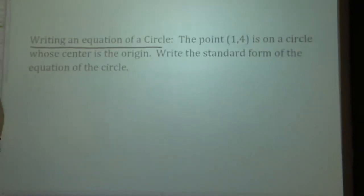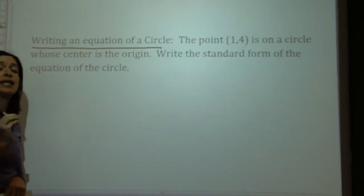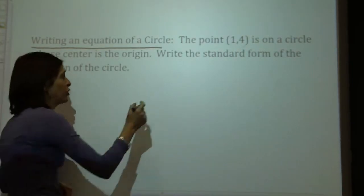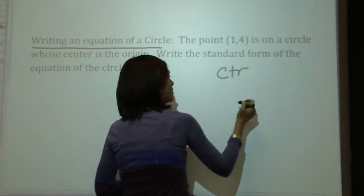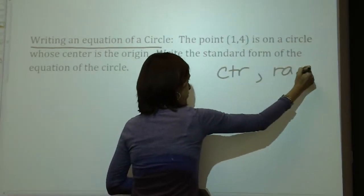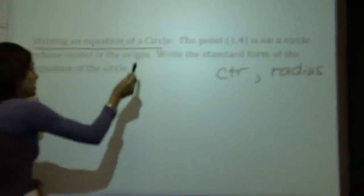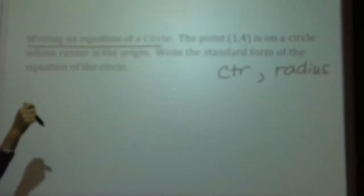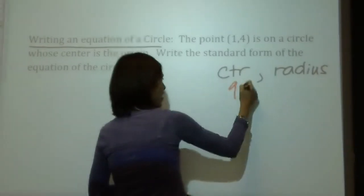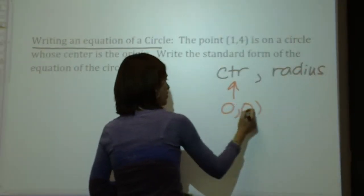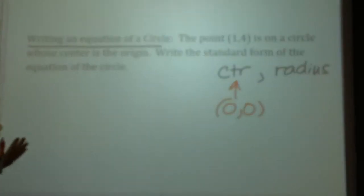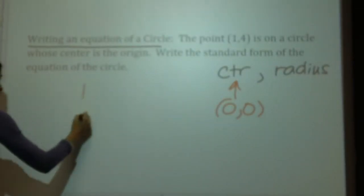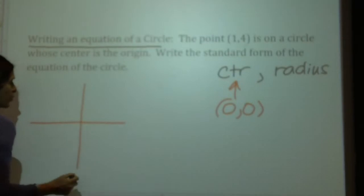I can make this harder. I can ask you to write an equation of a circle given some information. The one thing I always want you to remember is that in order to write an equation of a circle, you need the center and you need a radius. This question says the point (1, 4) is on a circle whose center is the origin. I have my center — h, k is (0, 0) — but I don't see a radius, so I'm going to draw this out for myself.